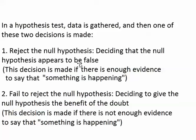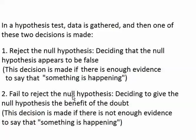This wording sounds a little strange, so I'll try to clarify. The researcher in a study usually wants to reject the null hypothesis, because the researcher wants to say that something is happening. If the researcher doesn't gather enough evidence to confidently conclude that something is happening, it's like a failure — the person has failed to reject the null hypothesis. They failed to show evidence that something is happening. That's where the wording comes from.